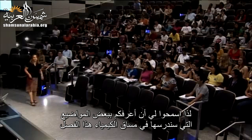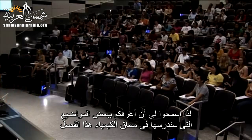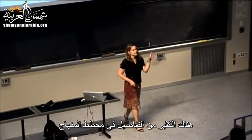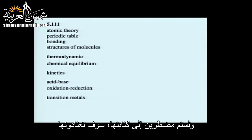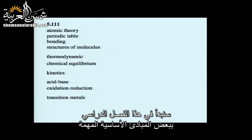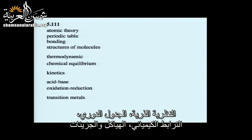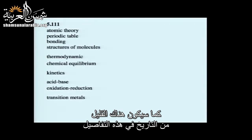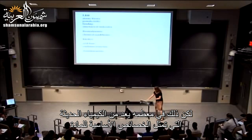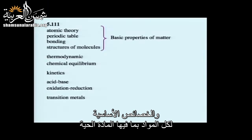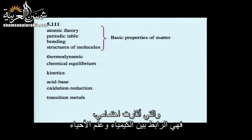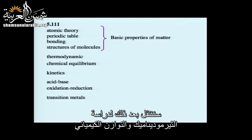Let me introduce you to some of the topics we'll cover this semester. There's more detail on your syllabus, but these are the basic things. We start with really basic principles: atomic theory, periodic table, bonding, structures of molecules. This is mostly modern chemistry representing the basic properties of matter — including living matter, which is what really interests me, that connection between chemistry and biology. We then go on to thermodynamics and chemical equilibrium, which is about reactions — whether a reaction will go, will it be spontaneous, and if there's an equilibrium, what direction will it shift.